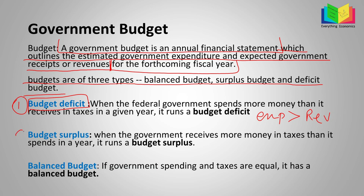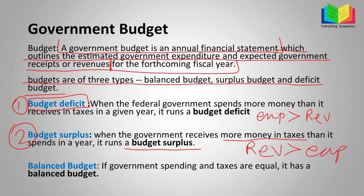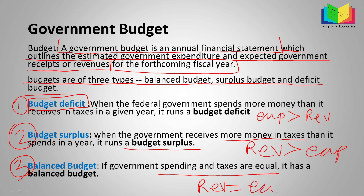The second is budget surplus. When the government receives more money in taxes than it spends in a year, it runs a budget surplus — here the government revenue is greater than their expenditure. In the final case, balanced budget: as the name suggests, here the spending and taxes are equal, so the government revenue is equal to expenditure. In that case there would be a balanced budget.